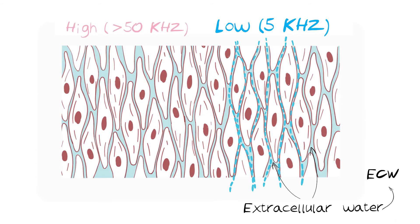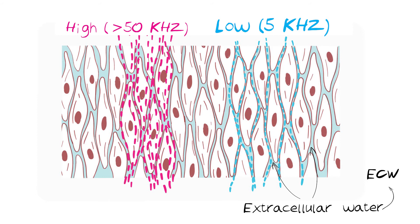Current with a frequency higher than 5 kHz is able to pass through cell membranes. This allows the measurement of impedance of substances inside the cells as well as outside the cells, therefore measuring total body water.